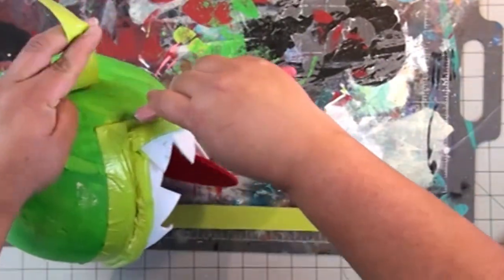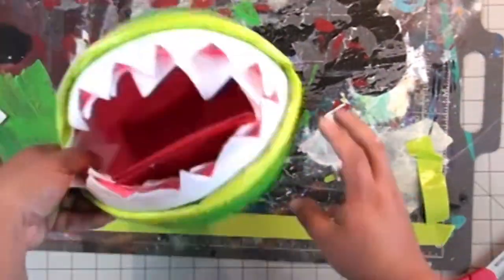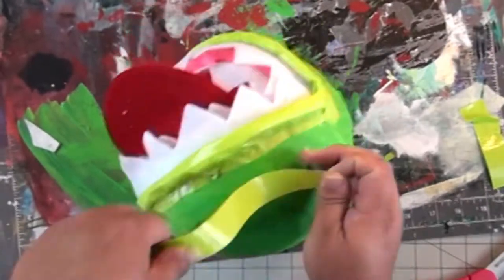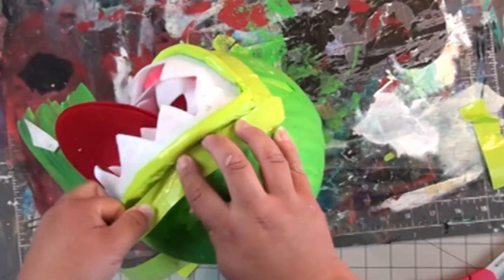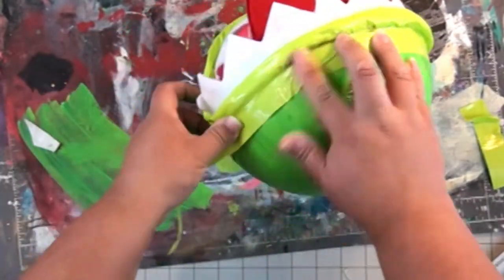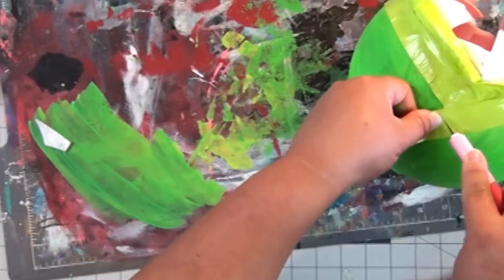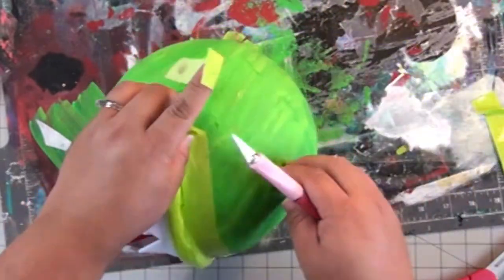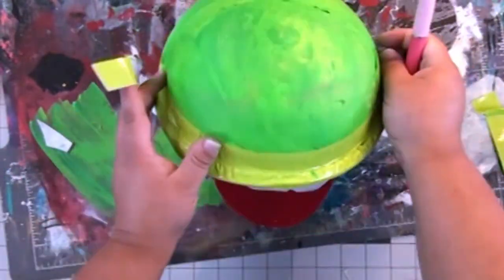I just pressed that down around the strip of duct tape that was already on the head and used that to kind of reinforce it. Then I used the craft knife to trim the little corners so that I got a nice crisp edge on those corners there.